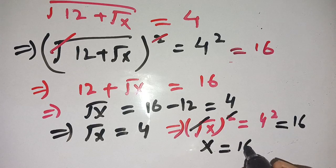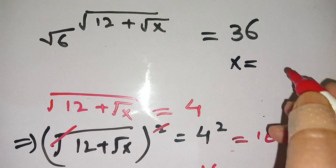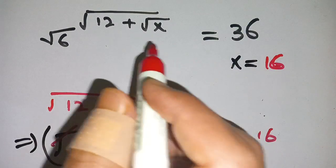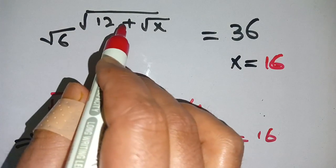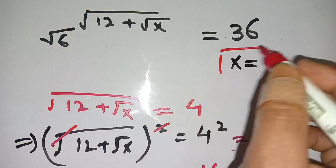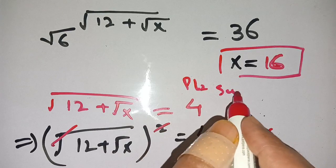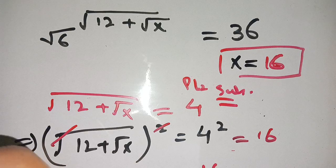Thus x equals 16 satisfies our given equation: square root of 6 to the whole power of square root of 12 plus square root of x equals 36. That's all for today's problem. If you are new here, please make sure to subscribe to our channel for more math videos. See you in the next video, till then bye.